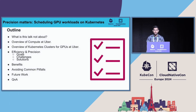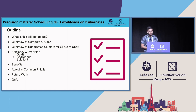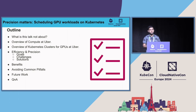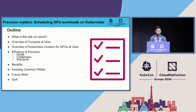As the outline of the talk, I just want to clarify what this talk is not about. This talk is not about how to set up GPU workloads at the beginning — I won't talk about how to set up your clusters to run GPU workloads. Rather, once you've set your clusters up, what sort of challenges and requirements you face along the way. I will go through a brief overview of how Compute works at Uber, an overview of Kubernetes clusters for GPUs at Uber, then cover efficiency and precision — the goals, challenges, and solutions. I'll also cover benefits of scheduling efficiently, common pitfalls, future work, and a short Q&A.